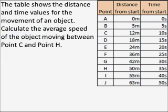In this example you've got a table of data, the distance from the start and the time from the start. The table shows the distance and time values for the movement of an object. Calculate the average speed of the object moving between C and H.